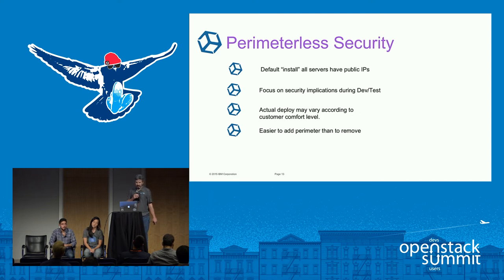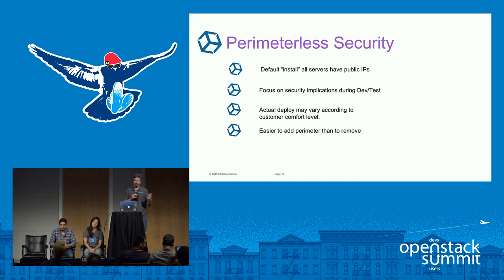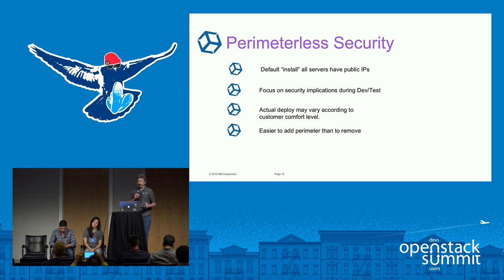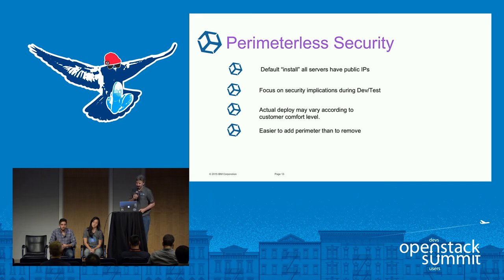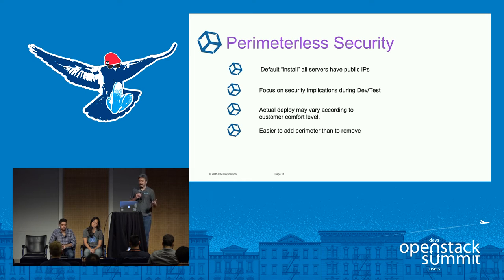We basically had perimeterless security. We always considered putting hosts on the internet first — most of our hosts always had a public IP. So we were very focused around firewalling at the OS level, with a lot of iptables rules. If a customer wanted something different, it was easy to add perimeters — firewalls and stuff like that — rather than to take them away and be surprised by them. We always had security as part of our testing pipeline, like checking that port 9200 on Elasticsearch was firewalled off from the public internet.